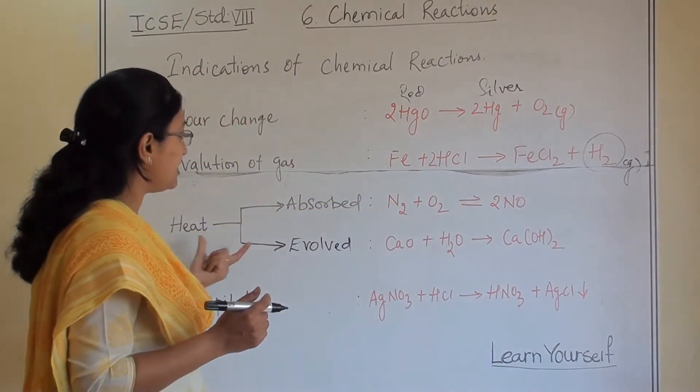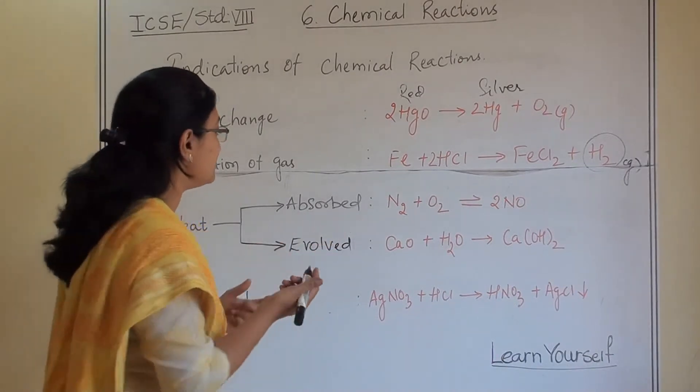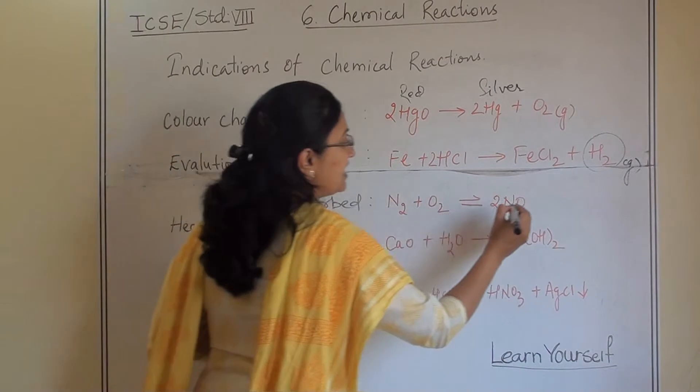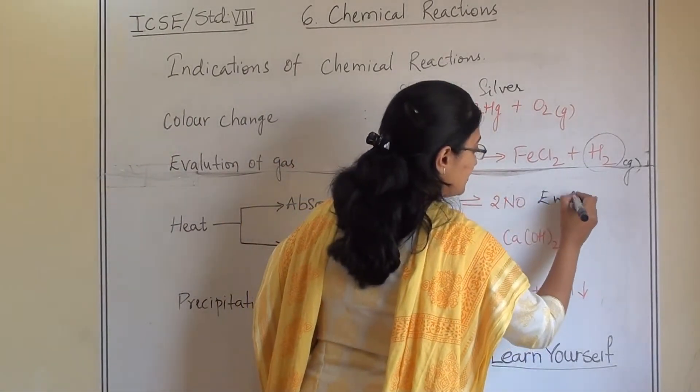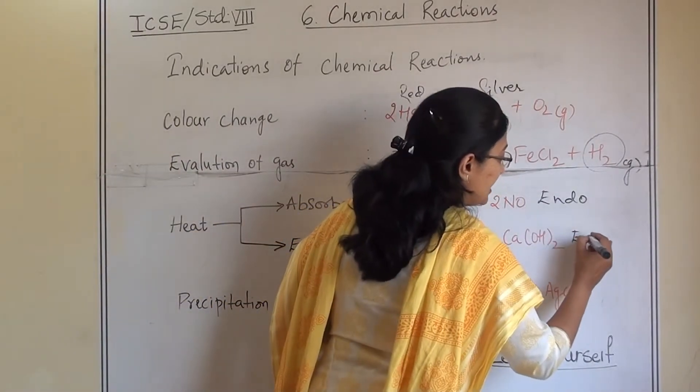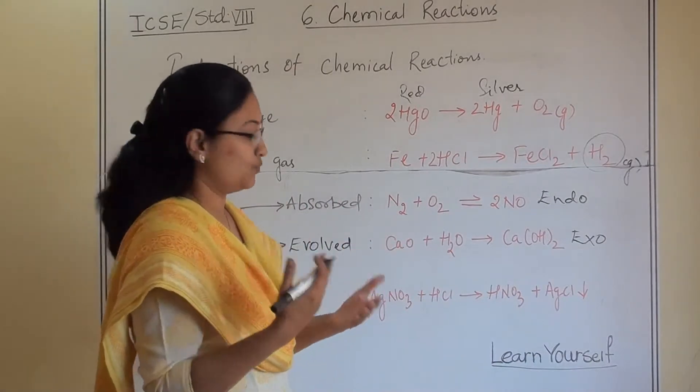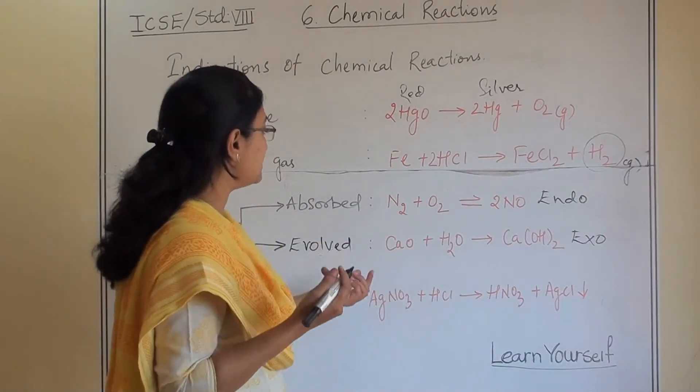In the form of heat when it is absorbed, heat is absorbed, this reaction is known as endothermic reaction. And when heat is evolved, that reaction is known as exothermic reaction. Exo means it is liberating the heat.